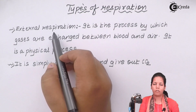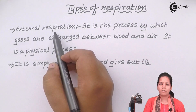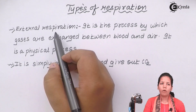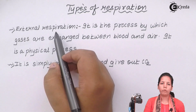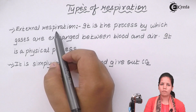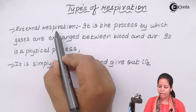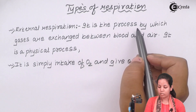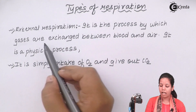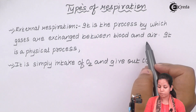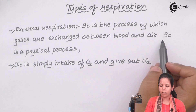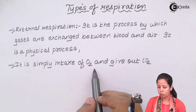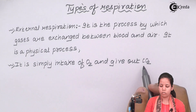During external respiration, the gas that is taken in is a mixture of oxygen and carbon dioxide. If you are present in a polluted area, it will also contain pollutants, soil, dust particles, and bacteria if they are present around. It is a mixture of everything. External respiration is a process by which gases are exchanged between the blood and the air — it is a physical process, basically a simple intake of O2 and giving out of carbon dioxide or CO2.